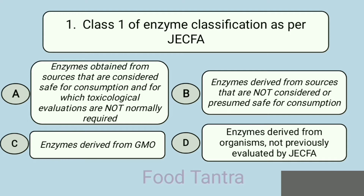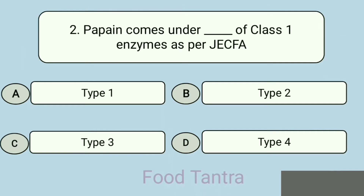Option D: enzymes derived from organisms not previously evaluated by JECFA. Correct answer: Option A. Question 2: Papain comes under which class of enzymes as per JECFA? Option A: Type 1. Option B: Type 2. Option C: Type 3. Option D: Type 4. Correct answer: Type 1.